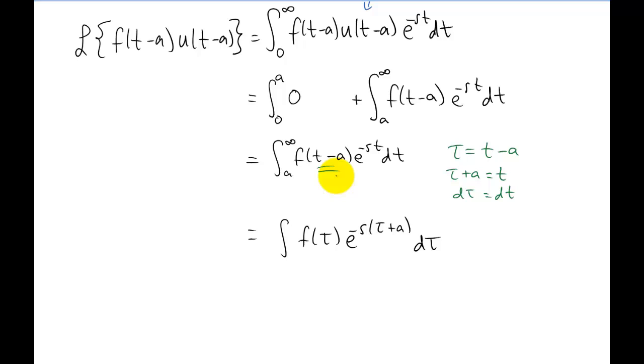Now these limits of integration up here were values, limits on t that went from a to infinity. What I like to do is replace t with tau plus a. And now I think it's pretty obvious that if we subtract a from both sides of this equation, our limits now go from 0 to infinity.